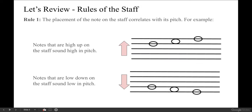Let's review two rules of the staff. First rule: the placement of the note on the staff correlates with its pitch. For example, in this top picture of the staff, you see the notes are higher up, so you know that these notes are going to have a higher sound, especially compared to the second example where the notes are lower down on the staff — you know those notes are going to have a lower sound.